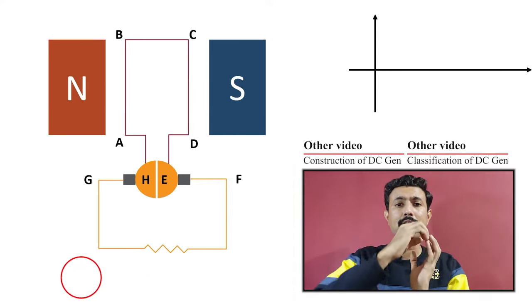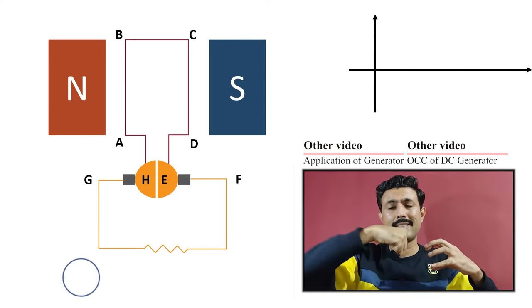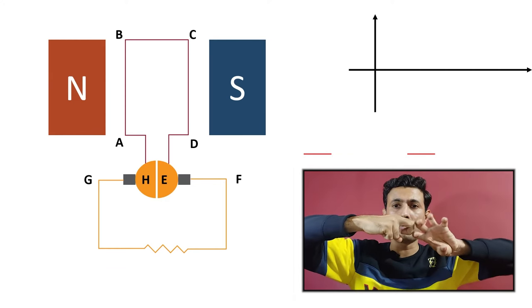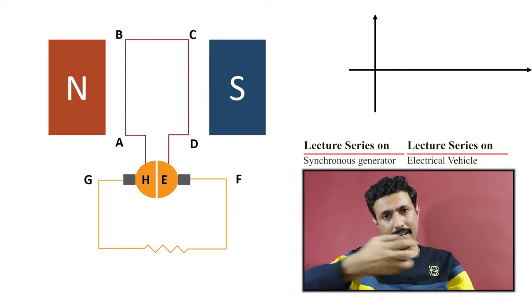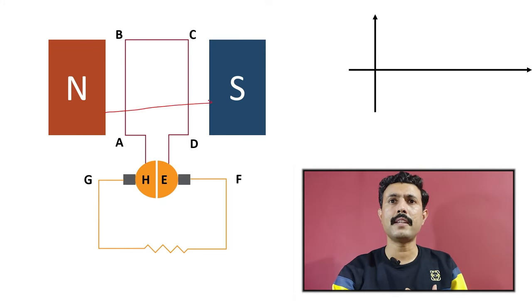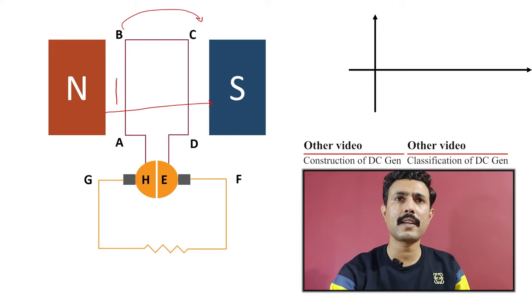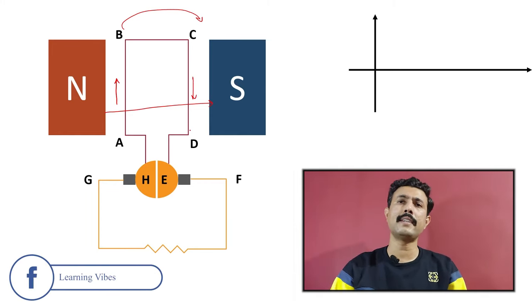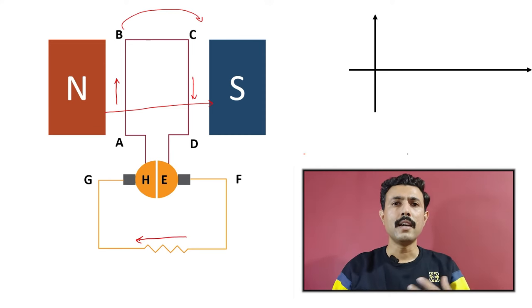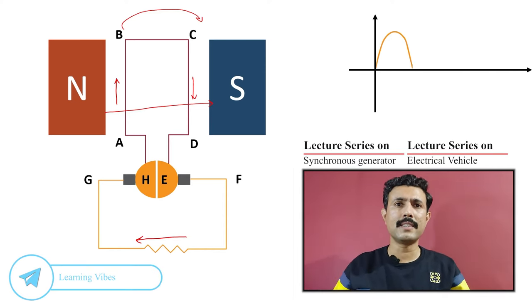Now let me replace the slip ring assembly with a commutator segment. The commutator segment rotates with the rotor, while the brush assembly stays stationary with the stator. The brush extracts current from the rotating part. With N-to-S magnetic field and clockwise rotation, current flows A to B and C to D in the conductors, and through the load from F to G — giving positive output voltage.